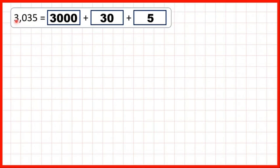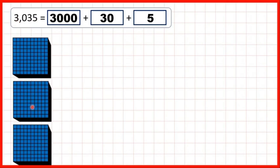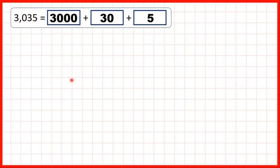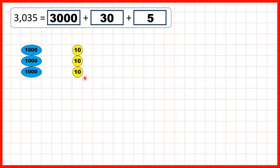Then we have three thousand and thirty-five. Using base-ten blocks, we can show three thousands. We don't show any hundreds, we show three tens and five ones. Or, using place value counters, there are three thousands, no hundreds, three tens, and five ones.